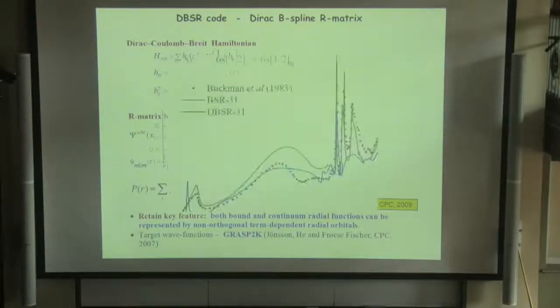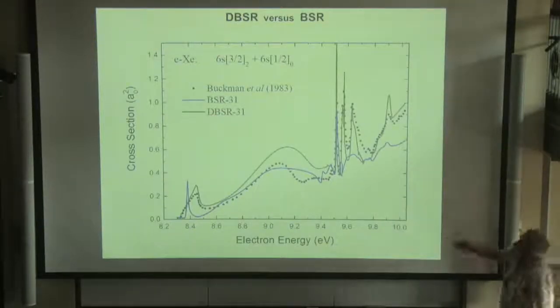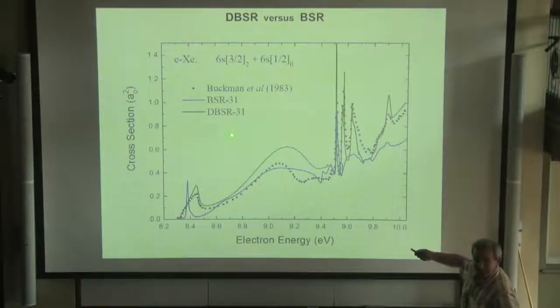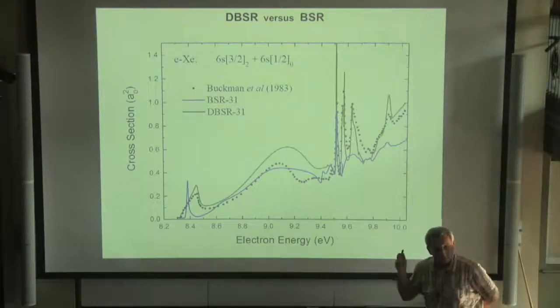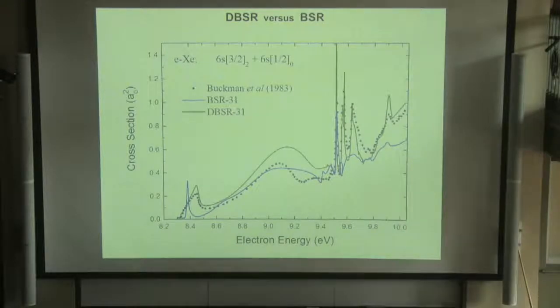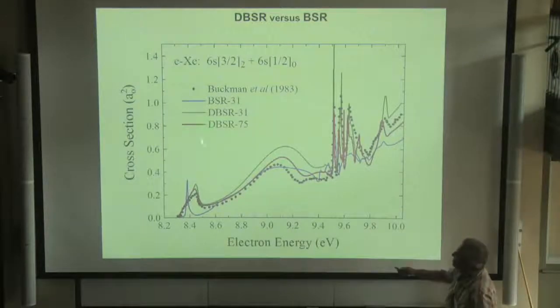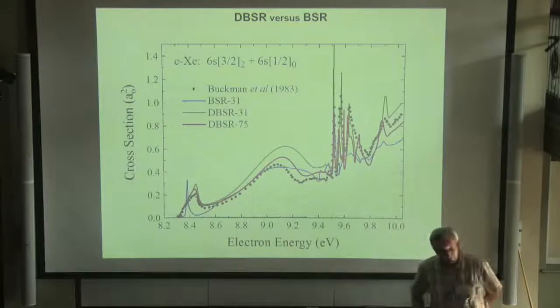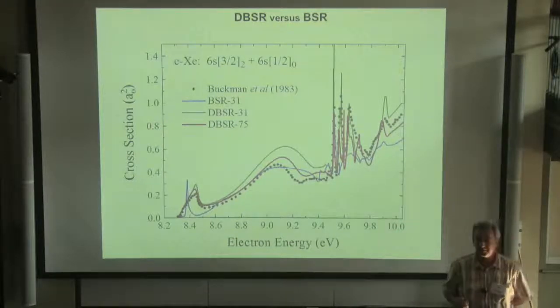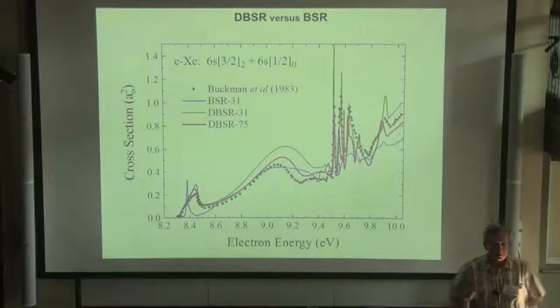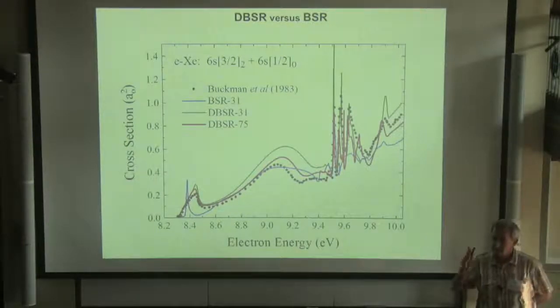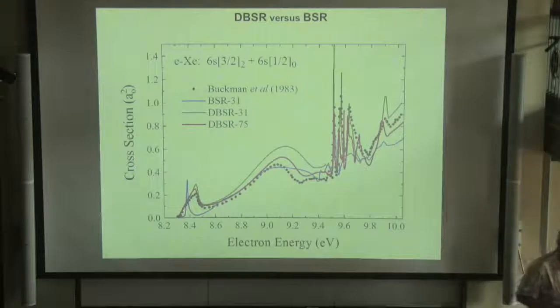When we use now the relativistic version with the same scattering model, we include the same number of states, we directly get improvement. The remaining difference is due to slow convergence, because when we manage the parallel version and include much more states, we obtain even better agreement. We believe that with relativistic code, we have the same accuracy as before for light atoms. I provide only one example here; much more examples are included in our recent topical review.